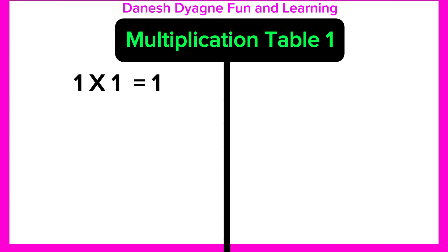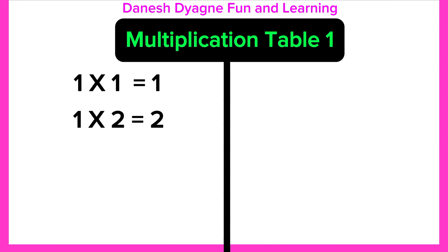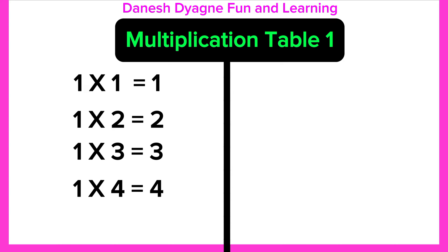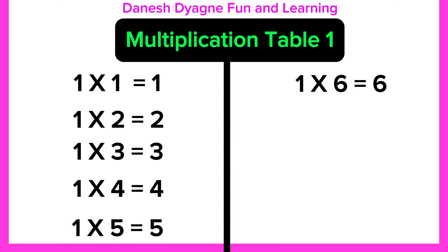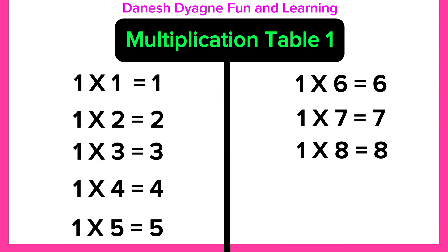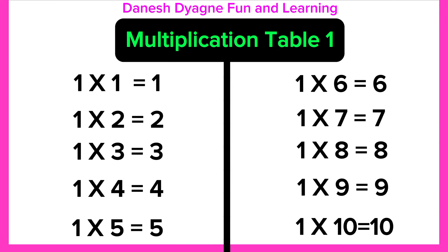1 times 1 equals 1. 1 times 2 equals 2. 1 times 3 equals 3. 1 times 4 equals 4. 1 times 5 equals 5. 1 times 6 equals 6. 1 times 7 equals 7. 1 times 8 equals 8. 1 times 9 equals 9. 1 times 10 equals 10.